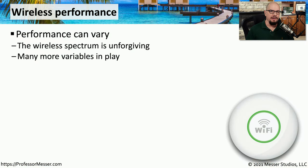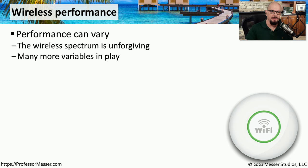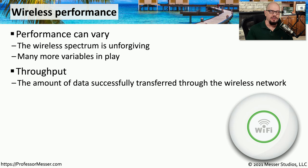One of the challenges with wireless networks is that the performance can vary quite a bit depending on where you happen to be, where the access point is, and a number of other variables in between. One way to measure this performance is through the use of throughput. We can send data through the wireless network and see just how much information we're able to transfer at any particular time.